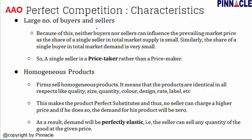The first characteristic of perfect competition is a large number of buyers and sellers. In a competitive market there are many buyers and sellers, and because of this neither buyers nor sellers can influence the prevailing market price. The share of a single seller in total market supply is small, and similarly the share of a single buyer in total market demand is very small. So a single seller is a price taker rather than a price maker.